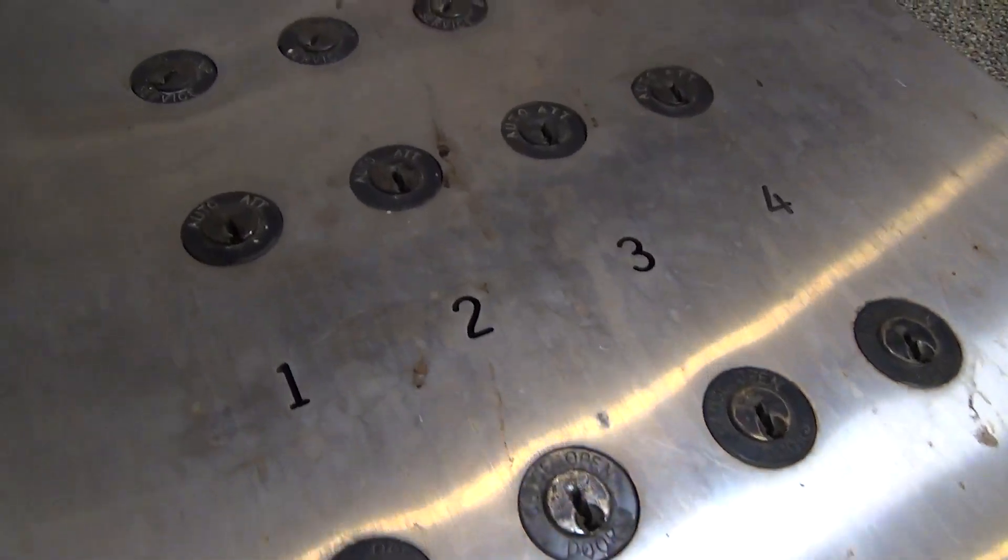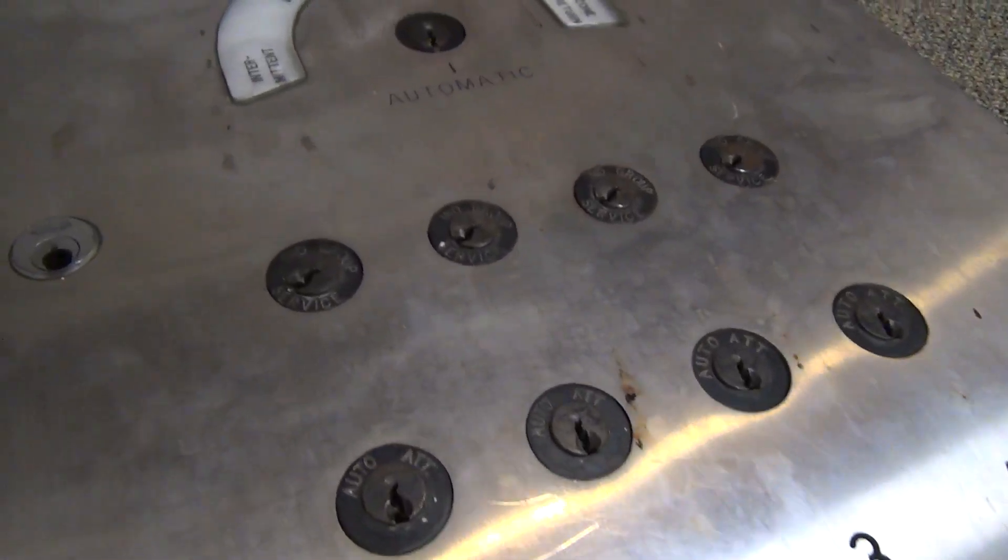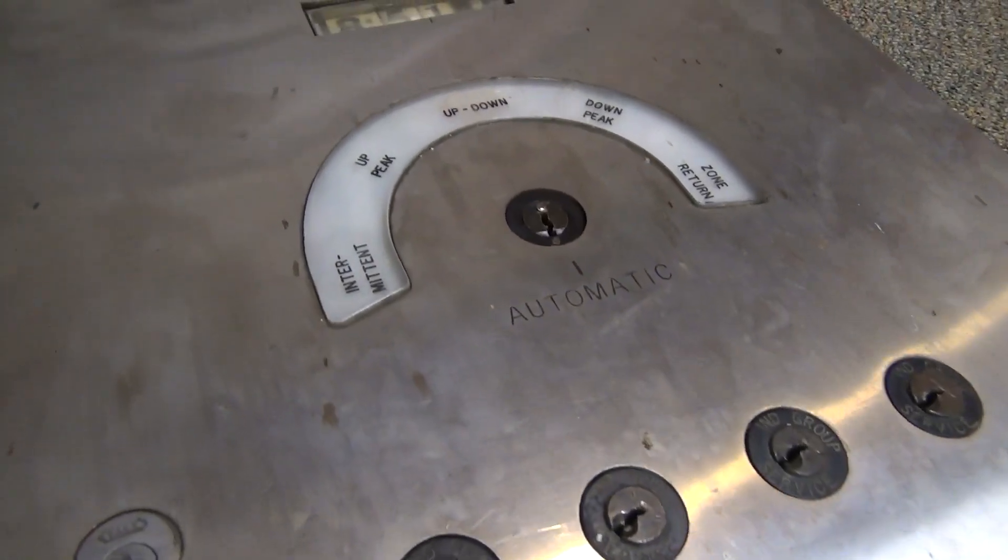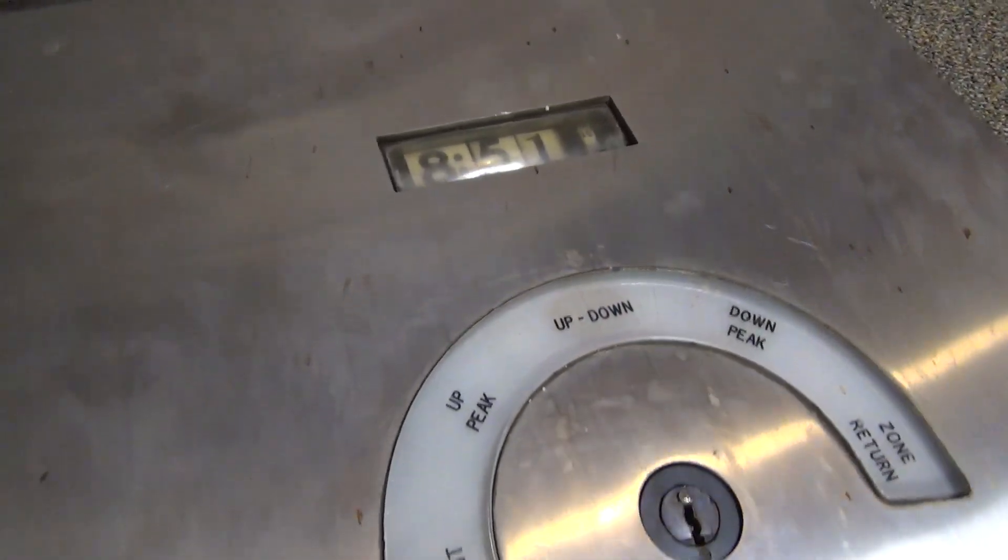So the panel here features some key switches to control the modes of each car. There's also a main mode control in the middle, and you can see there a little clock, an analog clock that is.